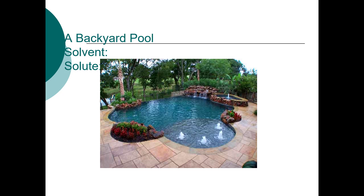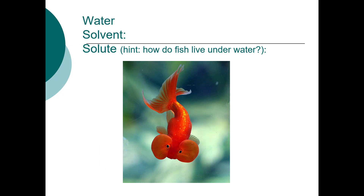In a backyard pool, the solvent is water — water is known as the universal solvent — and the solutes are whatever's dissolved in the pool, like chlorine, acids, or bases to stabilize pool chemistry. In a fish bowl, the solvent is again water. The fish isn't dissolved, but the fish stays alive because there's dissolved oxygen in the water — that's an example of a gas dissolved in a liquid.